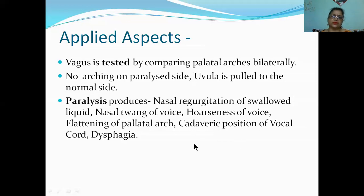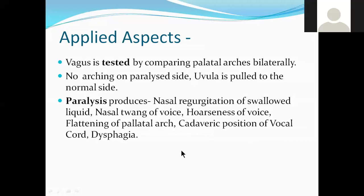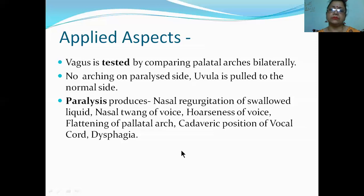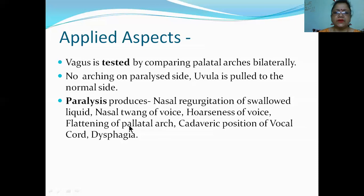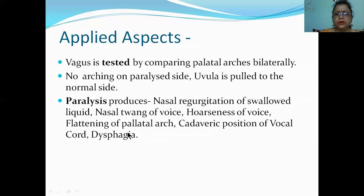Hoarseness of voice - why? Because the muscles of the vocal cords are supplied by the recurrent laryngeal nerve, which may be injured or compressed by a tumor. Cancer of the esophagus can also cause this problem. Flattening of the palatal arch occurs because the palatal muscle is paralyzed. Cadaveric position of the vocal cord means the cord lies flat, as in a dead body, because it is not being pulled.